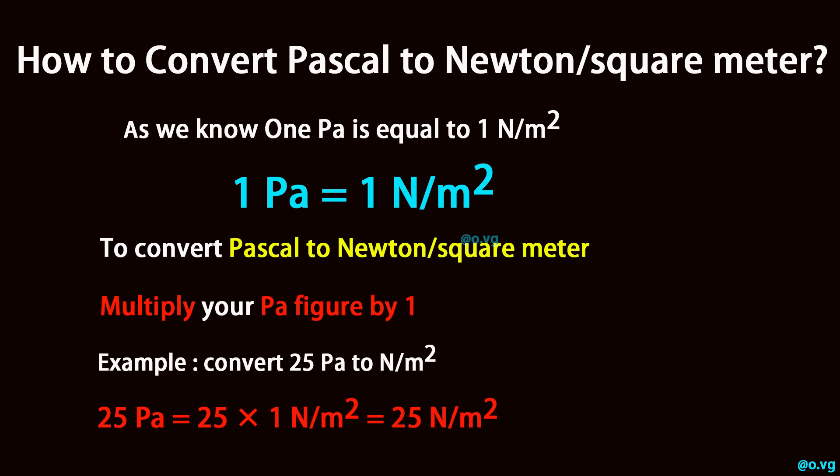To convert Pascal to Newton per square meter, multiply your Pascal figure by 1. For example, convert 25 Pascal to Newton per square meter: 25 Pascal equals 25 times 1 Newton per square meter, which equals 25 Newton per square meter.